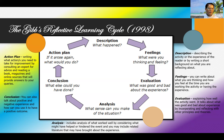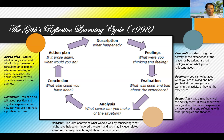After the conclusion is the action plan. The question here is: if the situation arose again, what would you do? In the action plan, you write what actions you need to take for improvement — by consulting an expert, reading a book or magazine, or using online sources to help answer your queries. To summarize, Gibbs' Reflective Learning Cycle consists of: description, feelings, evaluation, analysis, conclusion, and action plan.